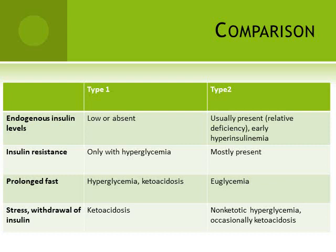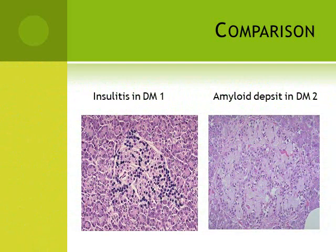Prolonged fasting causes hyperglycemia and ketosis in type 1; in type 2 it may cause hypoglycemia or the patient may maintain a euglycemic state. Stress and withdrawal of insulin leads to ketoacidosis in type 1; in type 2 it leads to non-ketotic hyperglycemia, and occasionally ketoacidosis if other stress factors are present. Histopathology of the islets of Langerhans clearly shows the difference: insulinitis with inflammatory cells is visible in type 1, while in type 2 there is an amyloid deposit rather than insulinitis.